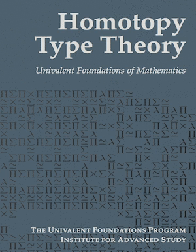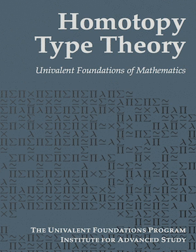The concept of a univalent fibration was introduced by Voevodsky in early 2006. However, because of the insistence of all presentations of the Martin-Löf type theory on the property that the identity types, in the empty context, may contain only reflexivity, Voevodsky did not recognize until 2009 that these identity types can be used in combination with the univalent universes. In particular, the idea that univalence can be introduced simply by adding an axiom to the existing Martin-Löf type theory appeared only in 2009.